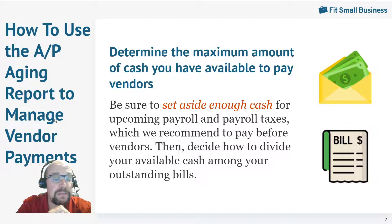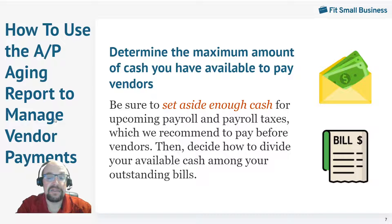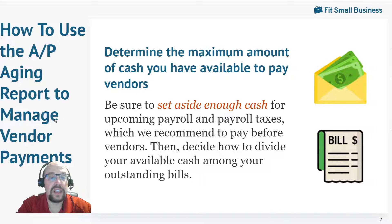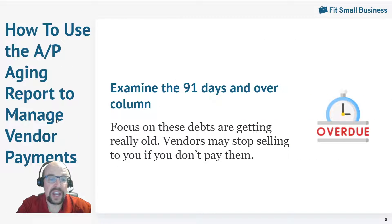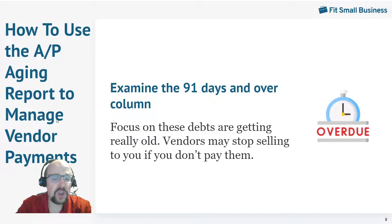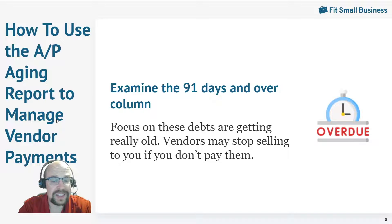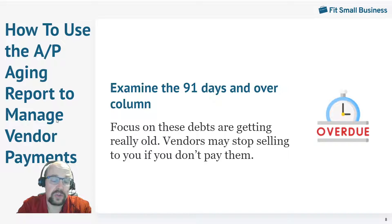Set enough money aside for payroll and taxes before paying any vendors. Then you can see how much cash you have left over and decide how to divide that among the vendors you owe. The first thing I would do is start with that 91 days and over column. These are the ones that are the most overdue and are likely going to stop providing service or products to you.